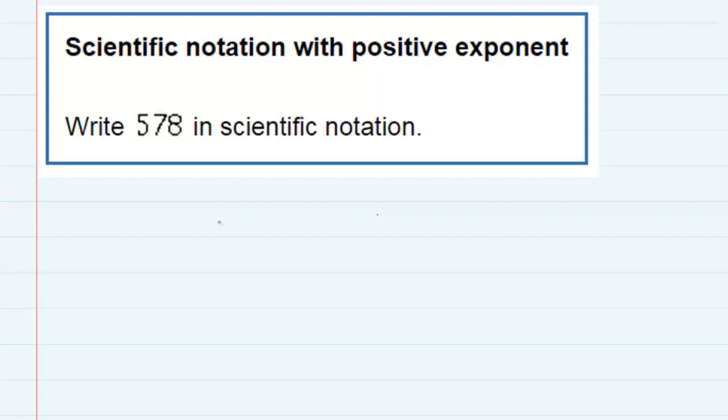First of all, scientific notation should have one digit to the left of the decimal point, and then we could have others to the right.